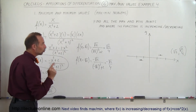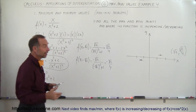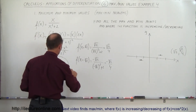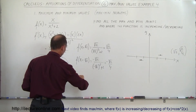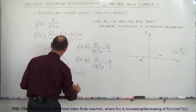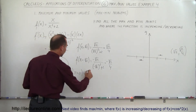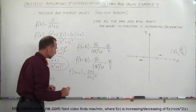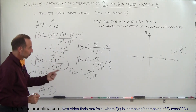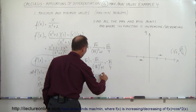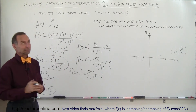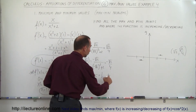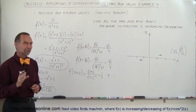We have to plug in three test values. Let's start with x equals 0, the region in between. f prime when x equals 0: plugging in zeros for x we get 0 plus 2 divided by 0 plus 2 squared, that's 2 divided by 4, which is one half. One half is bigger than 0, and that means it's positive. Positive slope means the function is increasing.